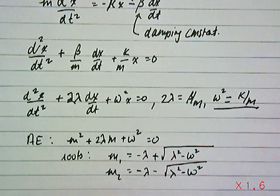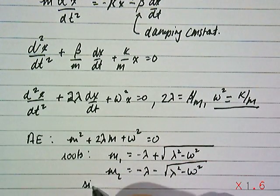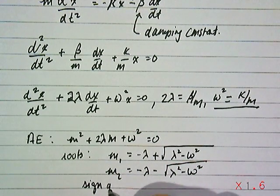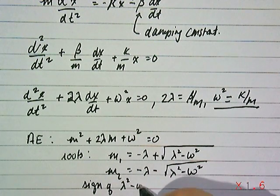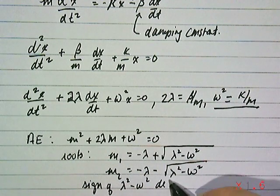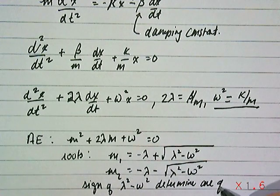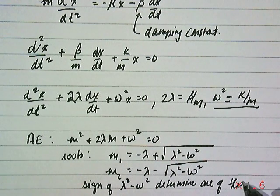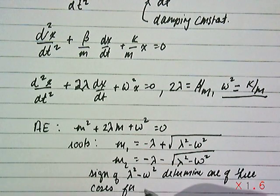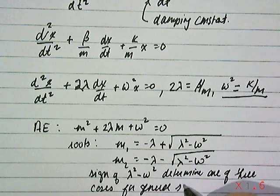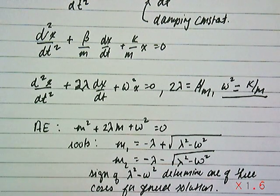You're going to get three cases of what the roots could be, depending on what's under that radical. The sign of this term, this difference, λ² minus ω², will determine one of three cases for the general solution. We're going to go through those cases and show you physically what the damping is going to do with the system.